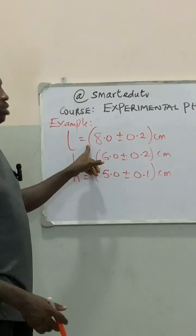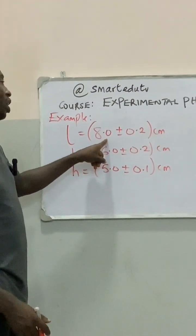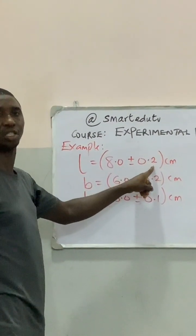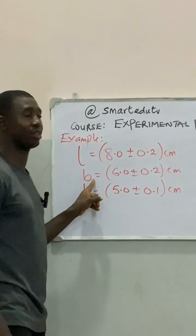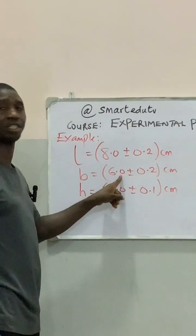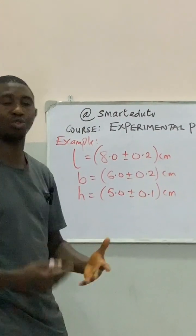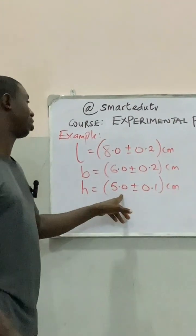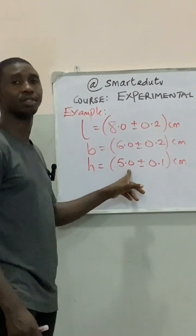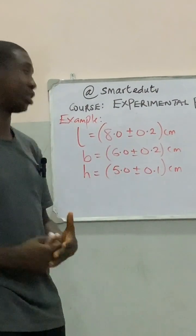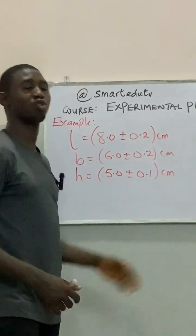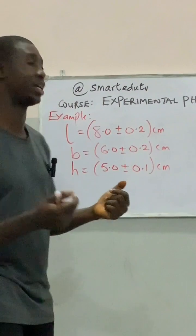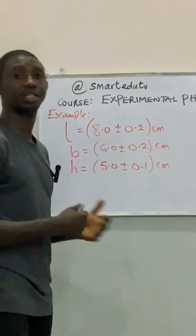Based on what we are given in the question, we are given the length. The actual value of the length is 8.0 centimeters and the error associated with that length is 0.2 centimeters. Also, for the breadth, the actual value is 6 centimeters while the error associated with the breadth is 0.2 centimeters. Similarly, for the height, the height is 5.0 centimeters and the error in the height is 0.1 centimeters.